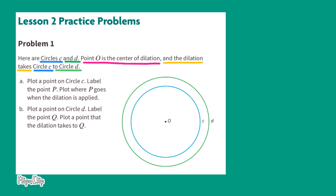Problem number one: Here are circles C and D. Point zero is the center of dilation, and the dilation takes circle C to circle D. Part A: Plot a point on circle C and label the point P. Plot where P goes when the dilation is applied.